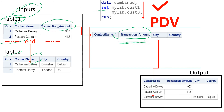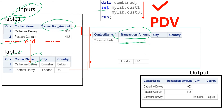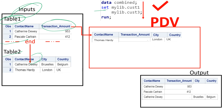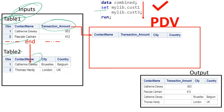Again, SAS will go back to table 2 and copy the second observation to the PDV area. The values from the second table will be placed in the corresponding columns or variables in PDV. Whatever is missing in the second table, a missing value will be populated, and then the remaining values will be populated in their corresponding variables. Once the observation is completed, it will again be populated to the output area. This is how SAS processes the one SET statement with multiple tables.